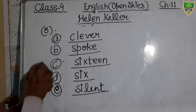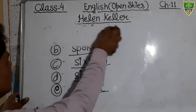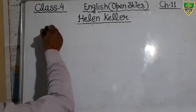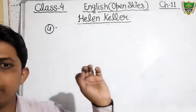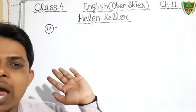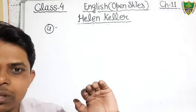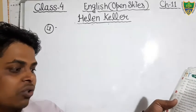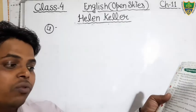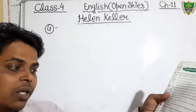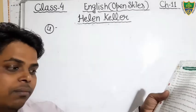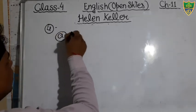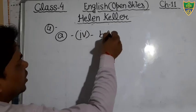Now we will discuss the next exercise, which is multiple choice questions. Sentences are given that are incomplete. To complete the sentences, there are four options given and you have to choose only one — the most appropriate or suitable option. Put a tick on the correct option. Question A: 'After her illness, Helen's parents found that she had become blank.' The options are: unconscious, deaf, dumb, blind. The fourth option, 'blind,' B-L-I-N-D, is the most appropriate and suitable answer.